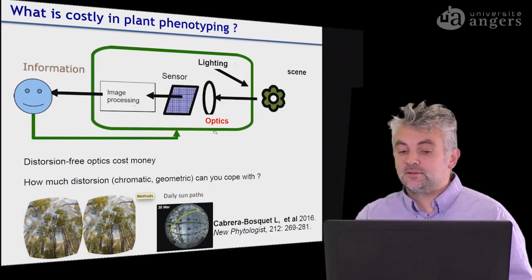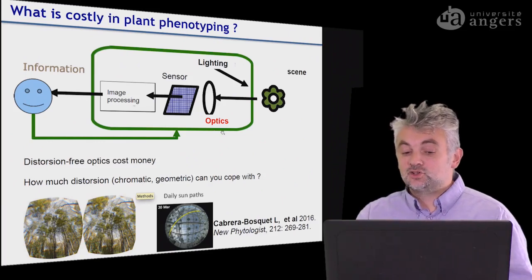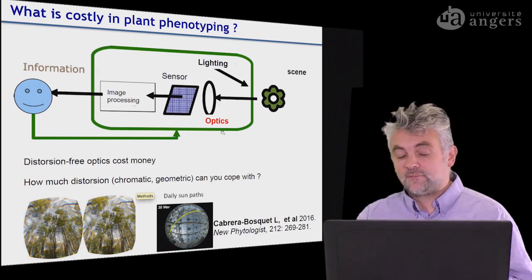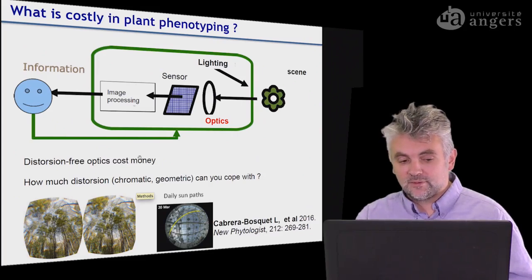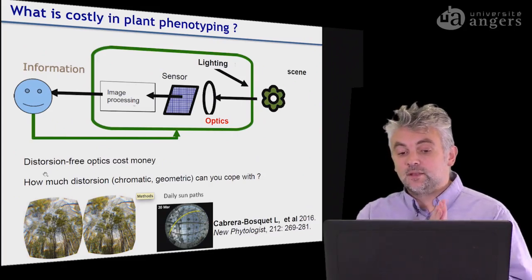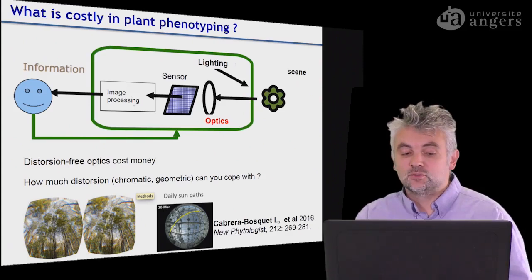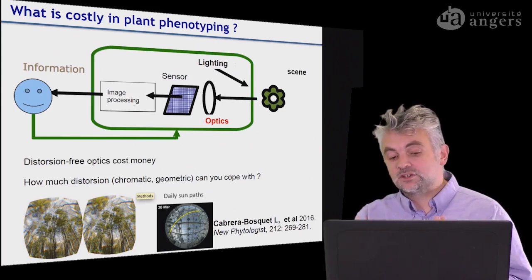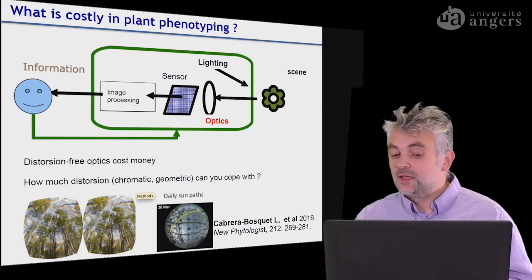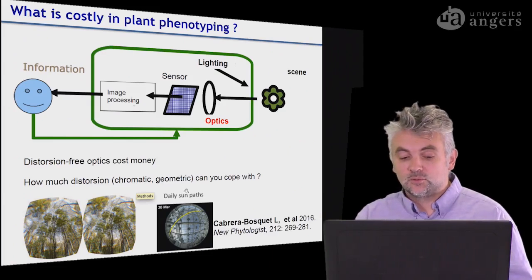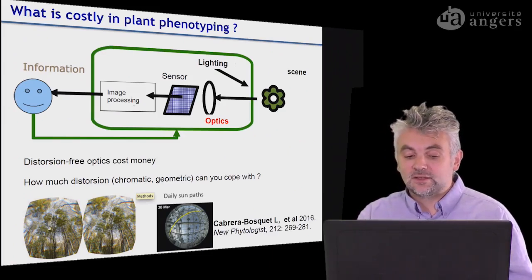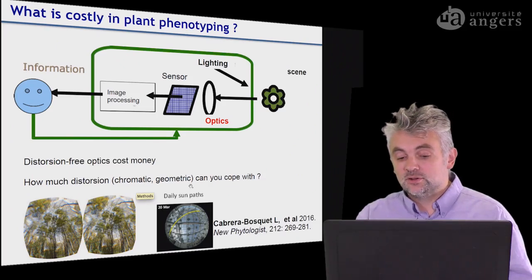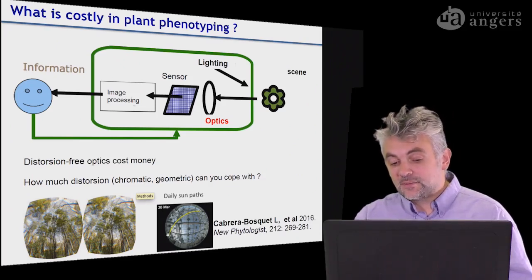We will start with the optics. The choice of optics can indeed affect the price of the system. You can pay for distortion-free optics, but it will cost you quite a lot of money. And sometimes having optics which can bear some distortion can in fact be very useful. This kind of distortion is visible here — it's called chromatic or geometric distortion — and in some cases you can use this kind of lenses.